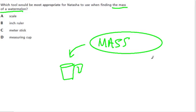I think a scale is more efficient because you can just take this watermelon and place it on a weighing scale and then see the weight. So I feel like A is the best answer.